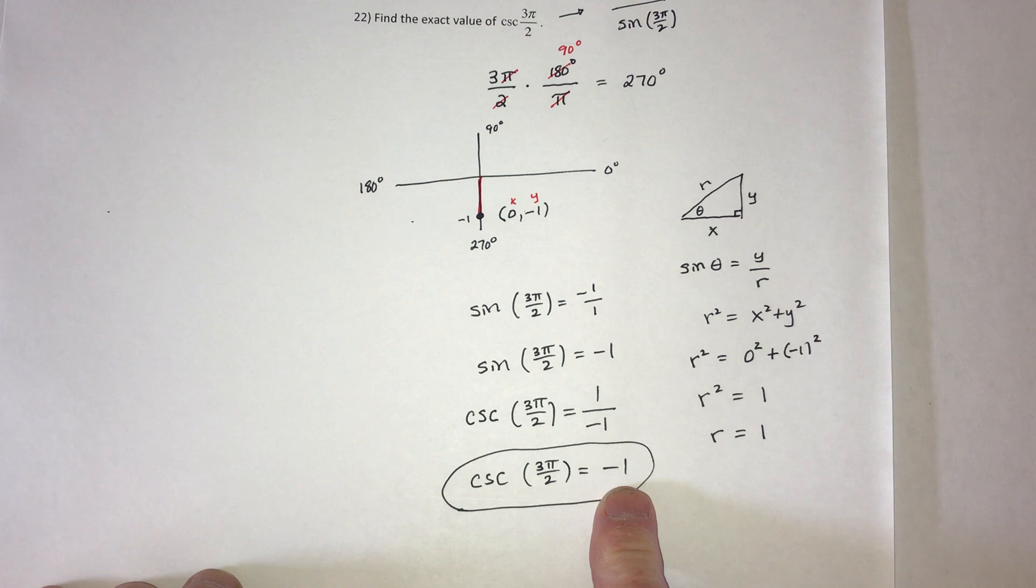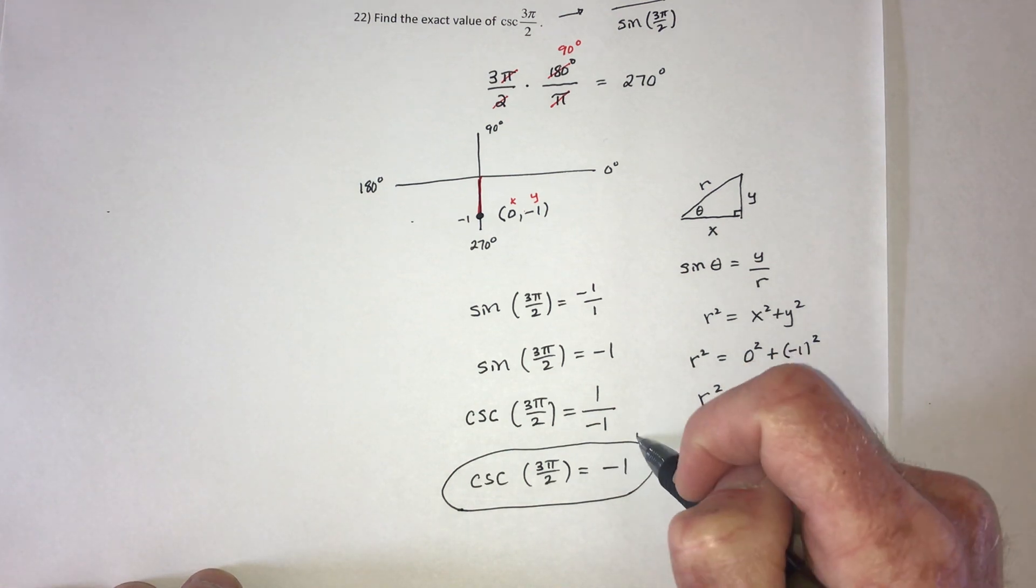Hey Alexa, how much is cosecant of 3π over 2? The answer is approximately 11.1209. Did that answer your question? No, Alexa, not at all. Please stop. Thanks for your feedback. Well, she didn't get it right, but I did.